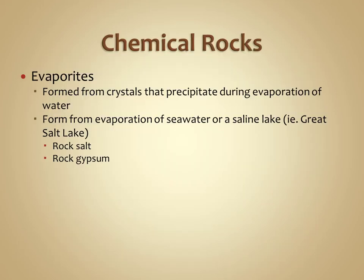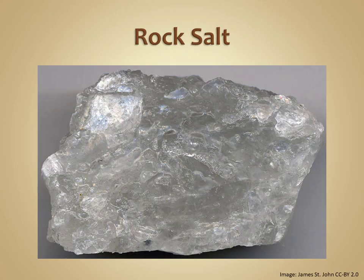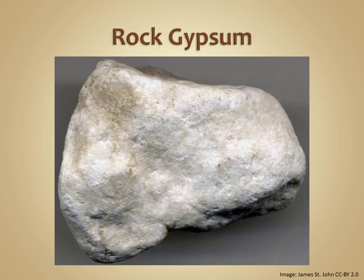Another group of chemical sedimentary rocks are known as evaporites. Evaporites form when you have evaporation of a body of water that is rich in minerals. Two common evaporites are rock salt, or the mineral halite, formed when seawater evaporates, and rock gypsum.